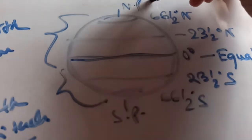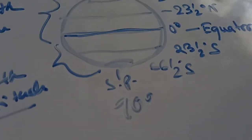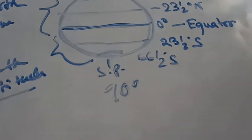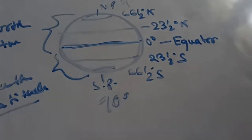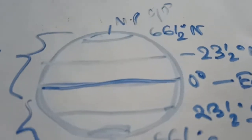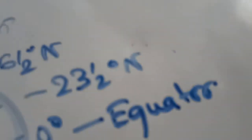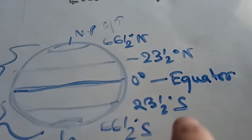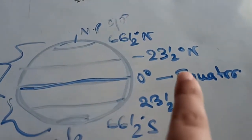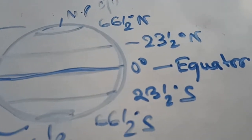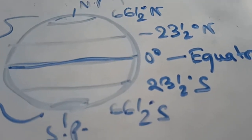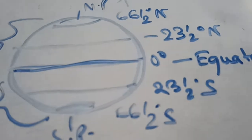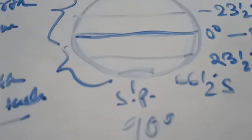The North Pole at 90°N, the South Pole at 90°S, then 66.5° south, 66.5° north, 23.5° south, 23.5° north, and the equator at 0°. These are the seven important parallels of latitude that are present on the earth's surface.